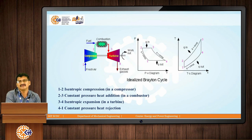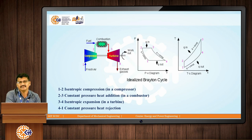It is an open cycle. In a closed cycle, heat exchangers are used for combustion and heat rejection after the exhaust. The gas used in the closed cycle, such as argon, is continuously circulated within the system. The gas enters the compressor, is compressed, and goes to the combustion chamber, but it does not mix with the fuel. A heat exchanger surrounds the pipe through which the argon gas circulates, and combustion takes place outside, transferring heat to the circulating gas.